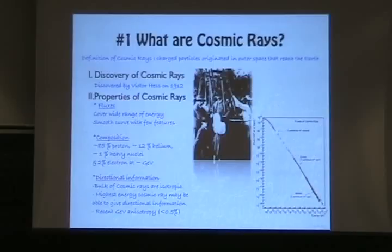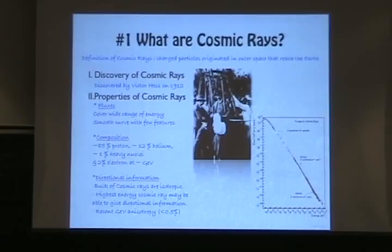There are numerous different kinds: lithium, beryllium, carbon, oxygen, hydrogen — all these elements that we know exist on earth. We also have 2% of electrons. But this composition is changing with energy, and there are some energy ranges not yet measured. We want to know what that information tells us and how it connects to our understanding of the universe.